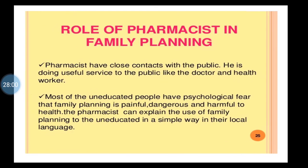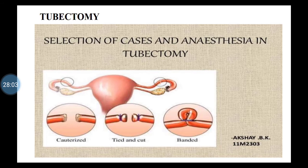Advantages of permanent methods: they are permanent, so no further action is required by either partner to prevent conception. These operations can be done immediately after delivery or abortion, and there are no side effects. They are carried out free of cost in government hospitals and primary health centers. Disadvantages: in tubectomy, the female has to be admitted to hospital. These methods are irreversible.